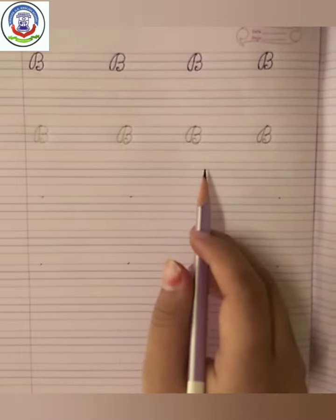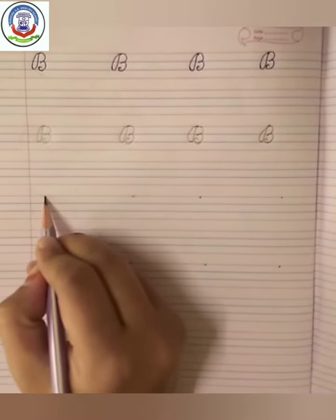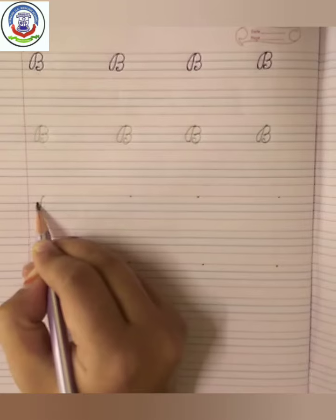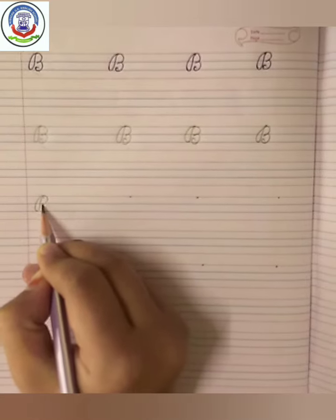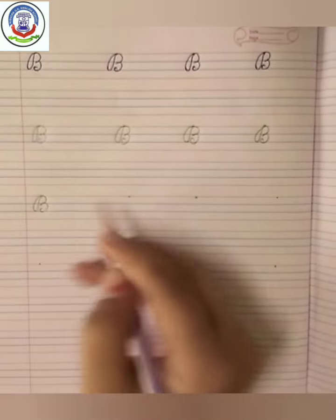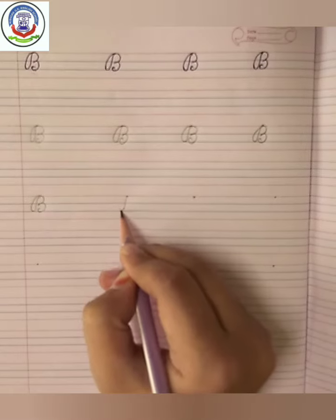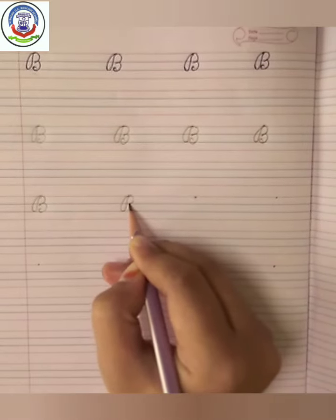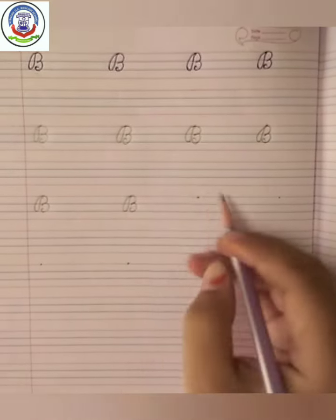In the same way, you have to write cursive B. B says burr, burr burr butterfly.